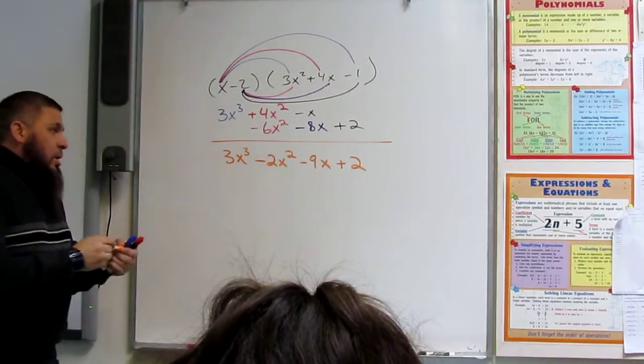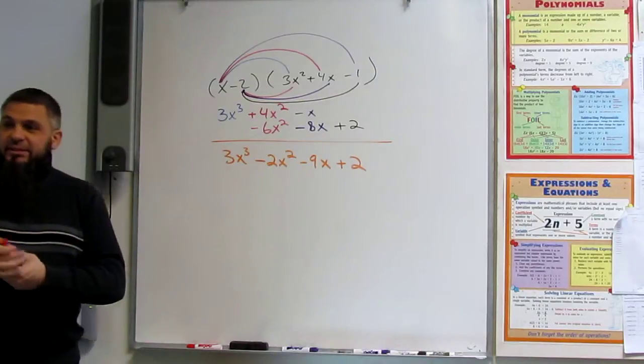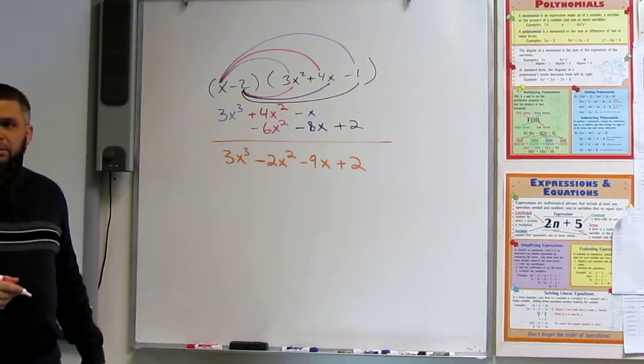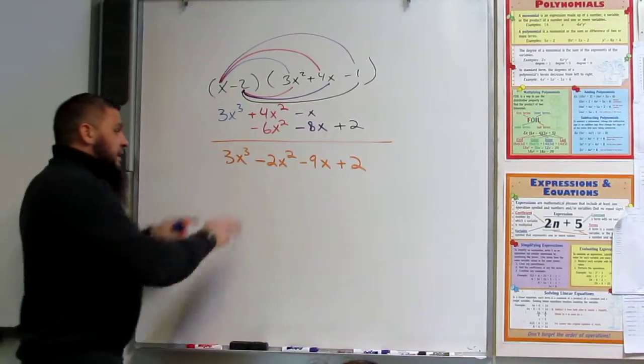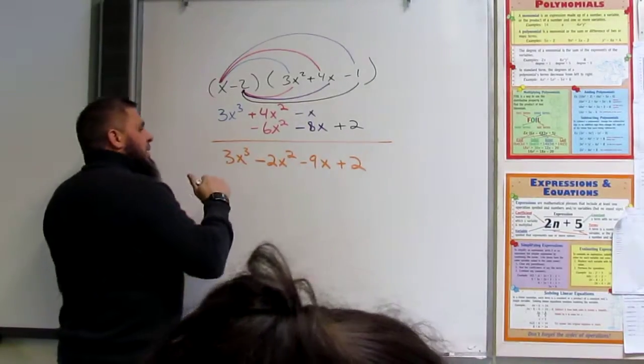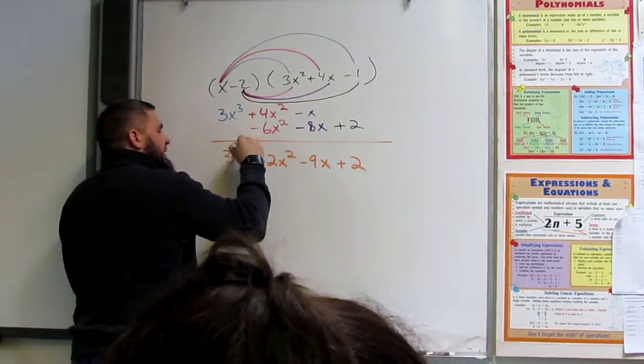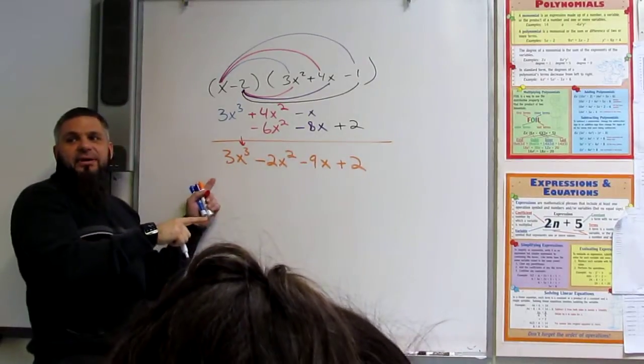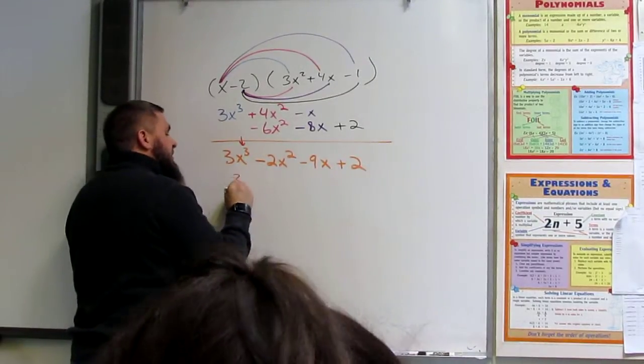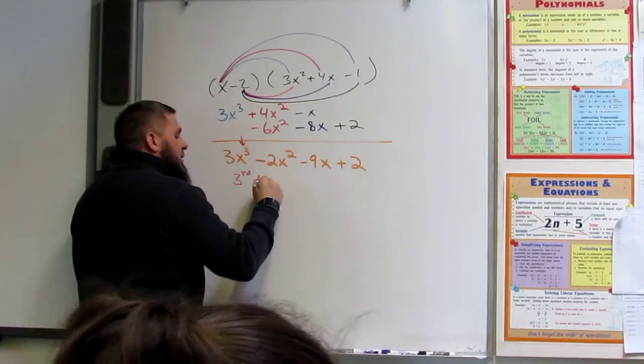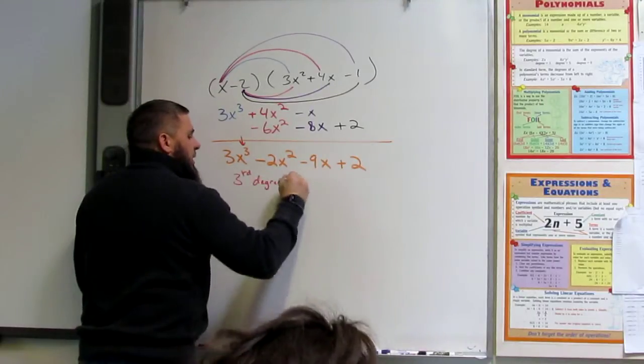Now, what degree polynomial is this? Quartic. It is a... In what degree? Oh, third. Third. Yeah, because of this exponent, right? Not that three. So this is a third degree polynomial.